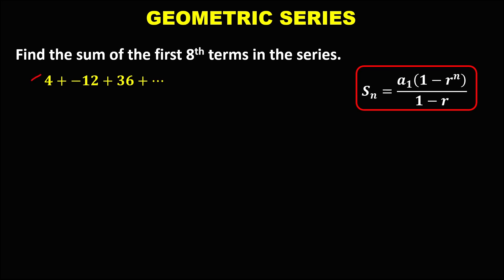first we need to check if everything in this formula is given. So we have A sub 1, and A sub 1 is the first term, so A sub 1 equals positive 4. Then we have R, or the common ratio,